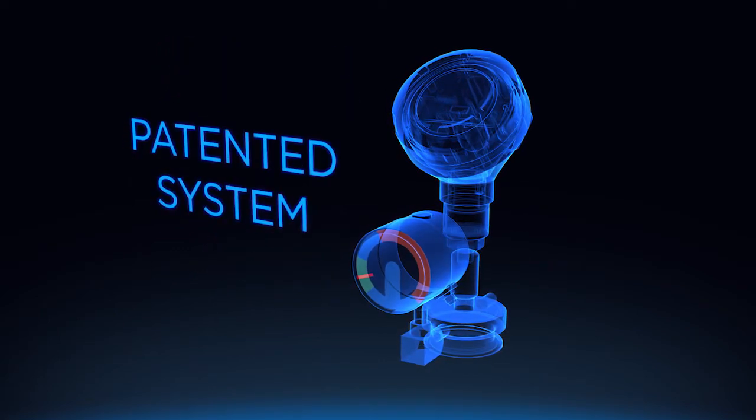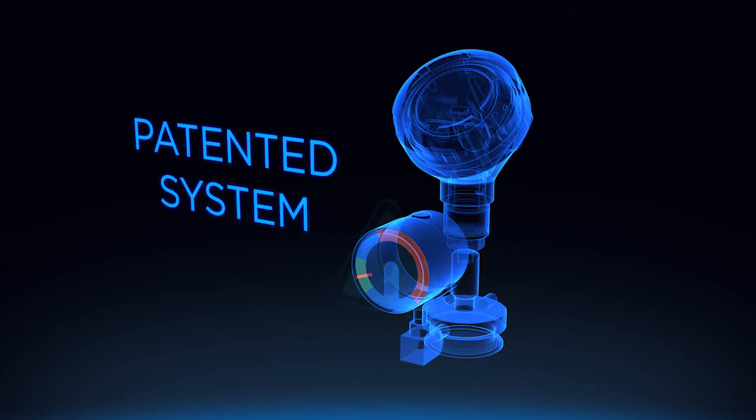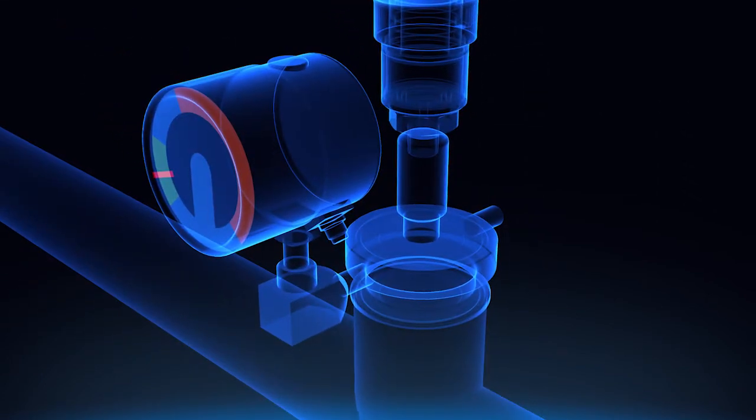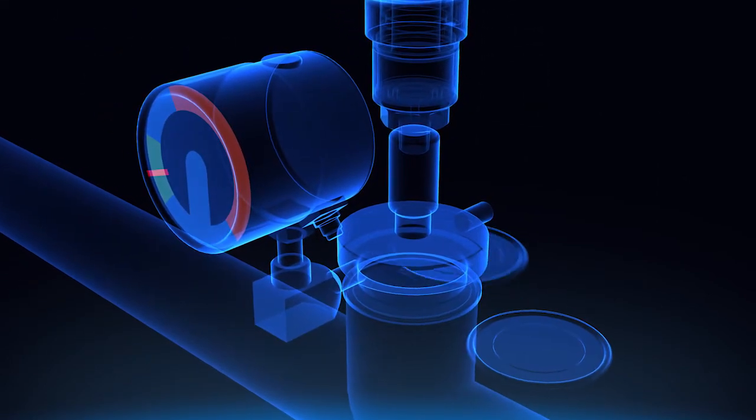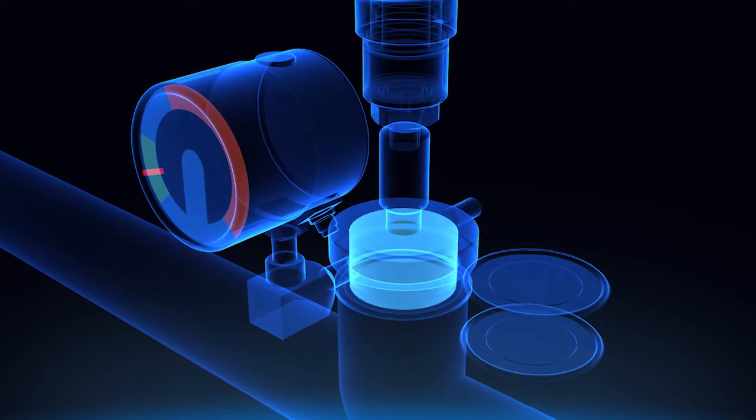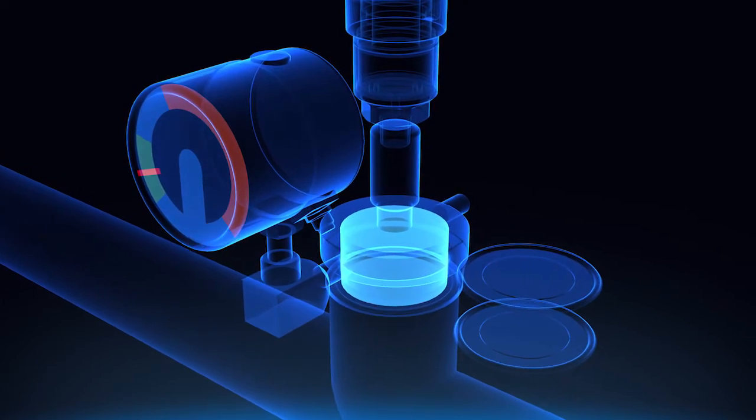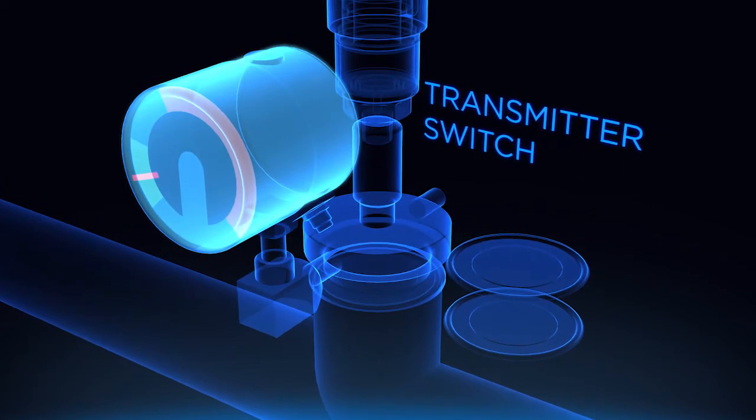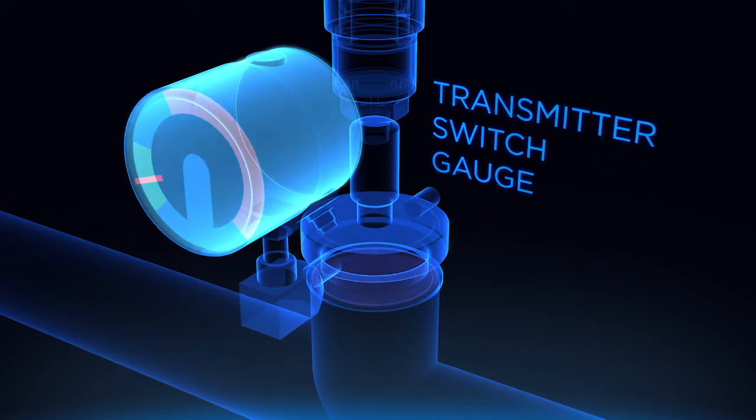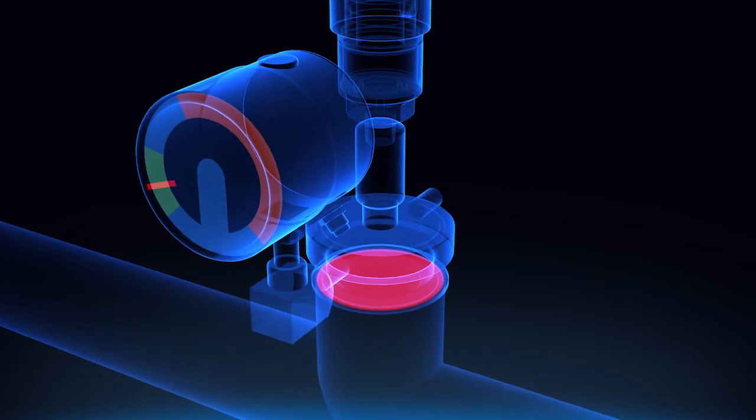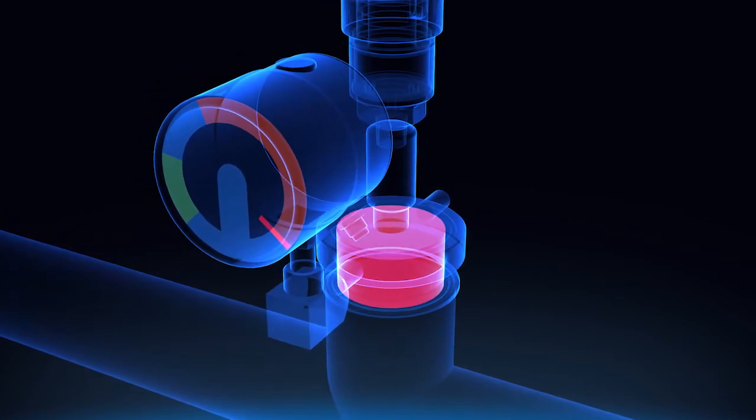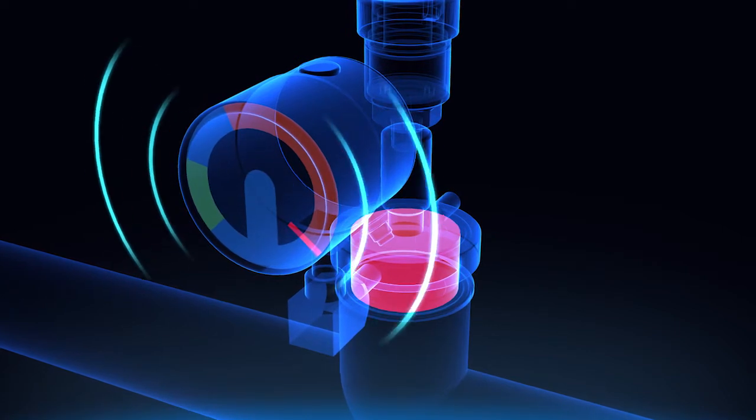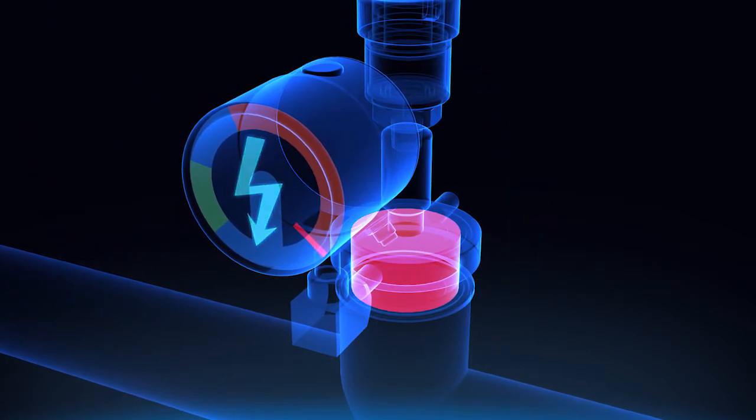With the patented Diaphragm Monitoring System, you are warned of a diaphragm breach before your operations are threatened. The monitoring system is designed with primary and secondary diaphragms, and the space in between is evacuated. This hard vacuum is monitored by a pressure transmitter, pressure switch, or pressure gauge. If the primary diaphragm is breached, the vacuum will be compromised, triggering a visual, audio, or electrical warning to alert you to the failure.